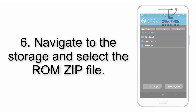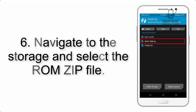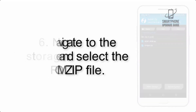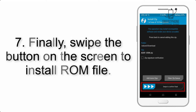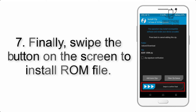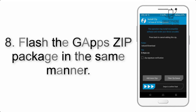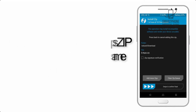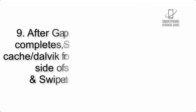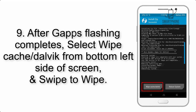Step 6: Navigate to the storage and select the ROM zip file. Step 7: Swipe the button on the screen to install the ROM file. Step 8: Flash the GApps zip package in the same manner.